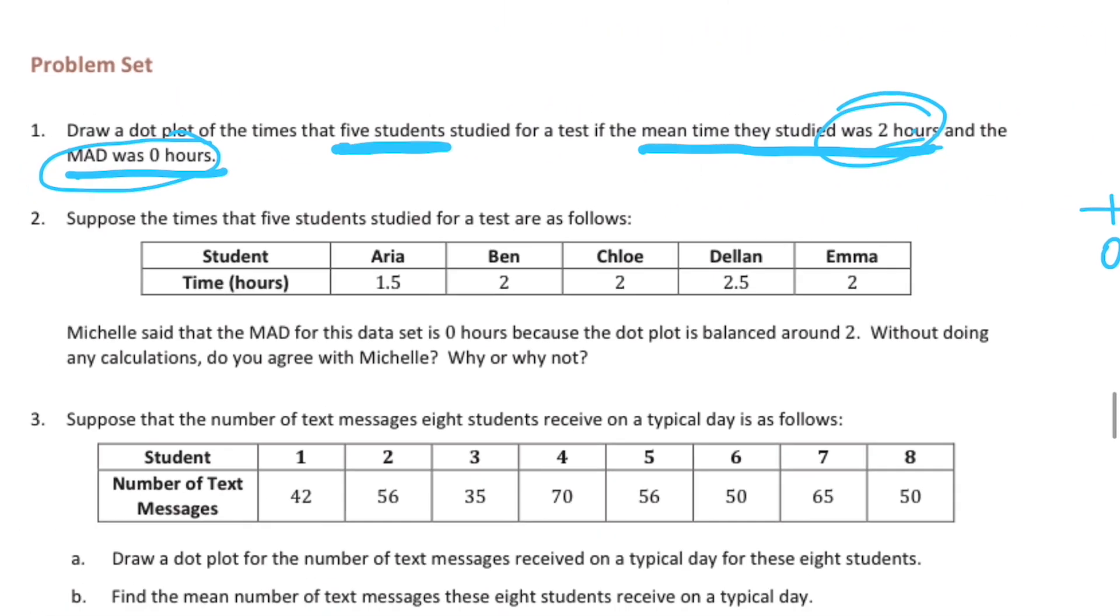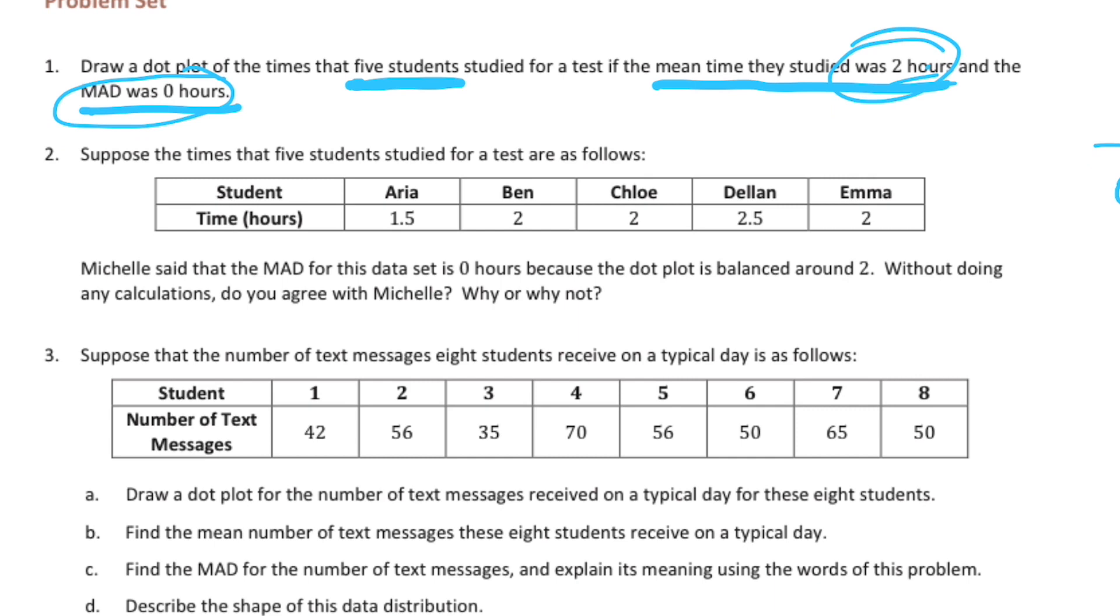Number two, suppose the times that the five students studied for a test are as follows. So we have someone, Aria, one and a half, Ben is two, Chloe's two, Dylan's two and a half, and Emma's two. Michelle said that the MAD for this data set is zero hours because the dot plot is balanced around two. Without doing any calculations, do you agree with Michelle? Why or why not?